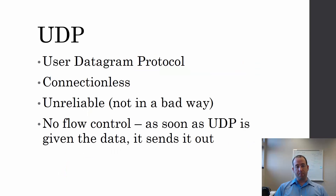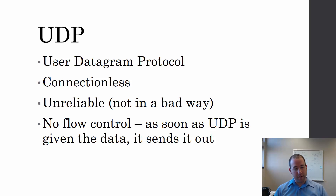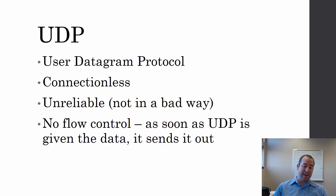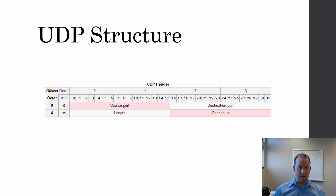First up is UDP. UDP stands for the User Datagram Protocol. It's connectionless. It is unreliable, but not in a bad way — it just means that it's not going to guarantee that anything arrives when it's supposed to or where it's supposed to. And it doesn't have any flow control, so as soon as UDP has data to send, it sends it.